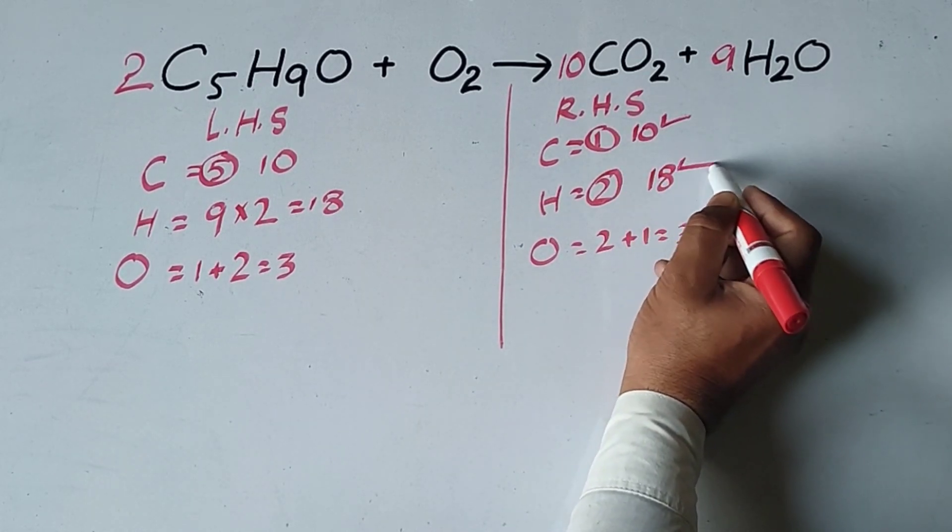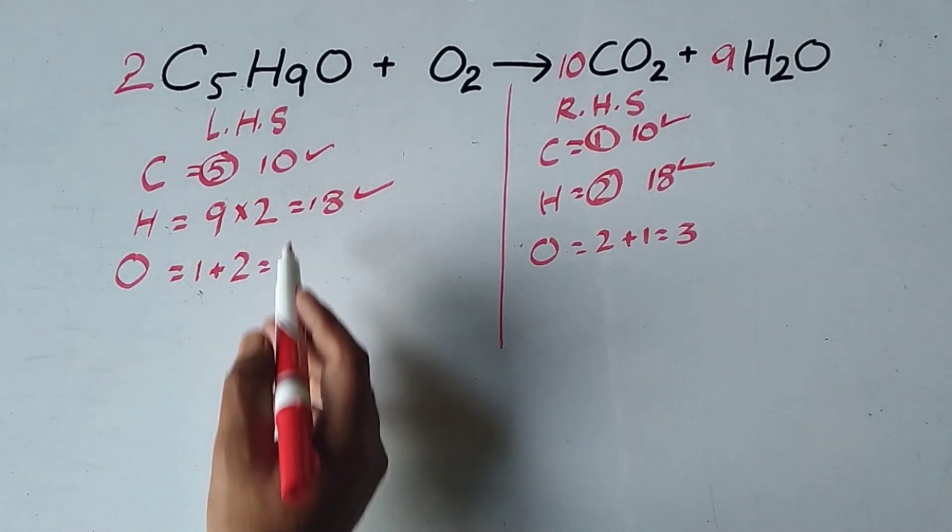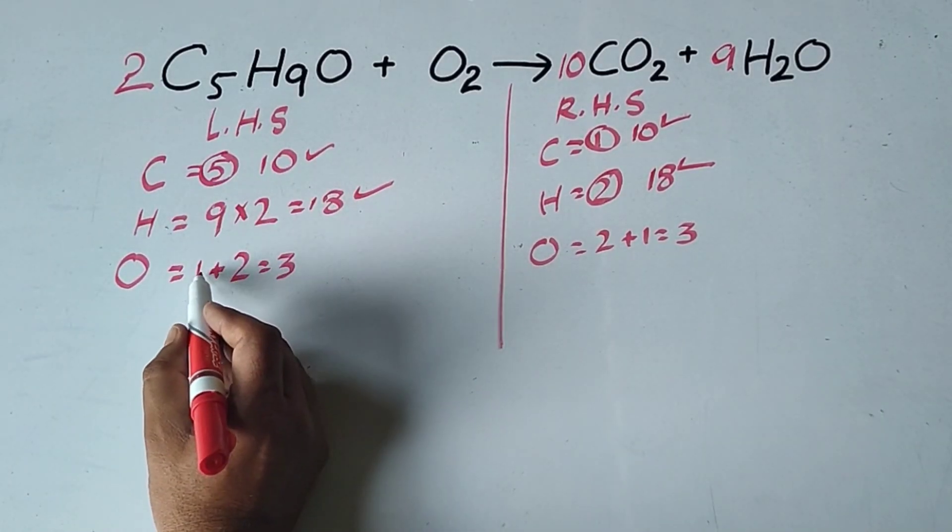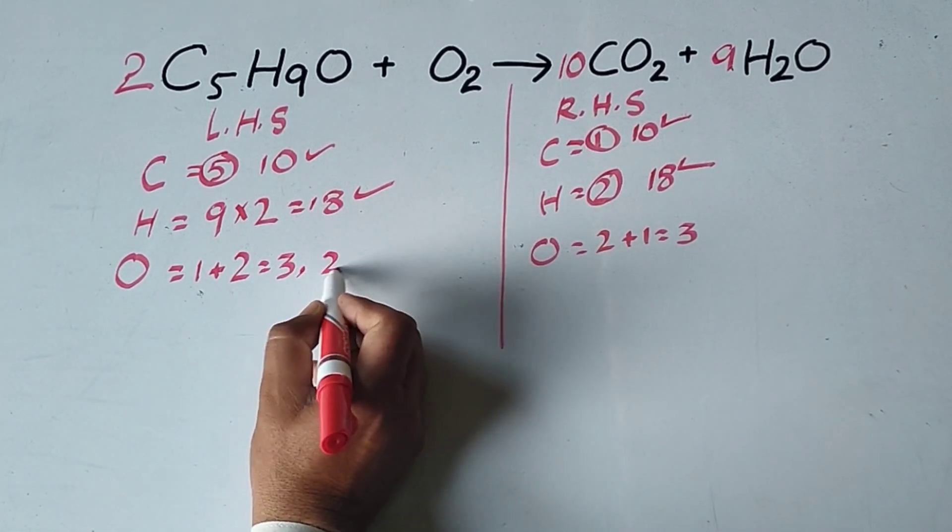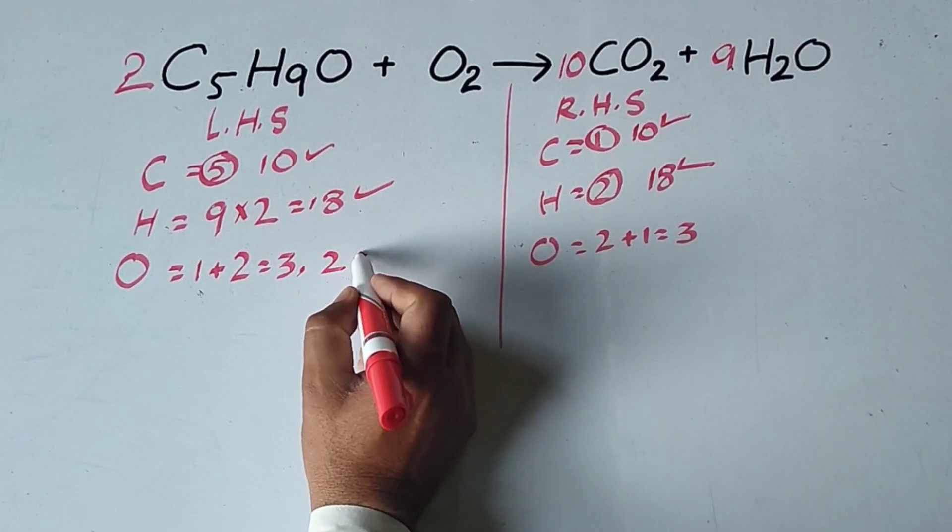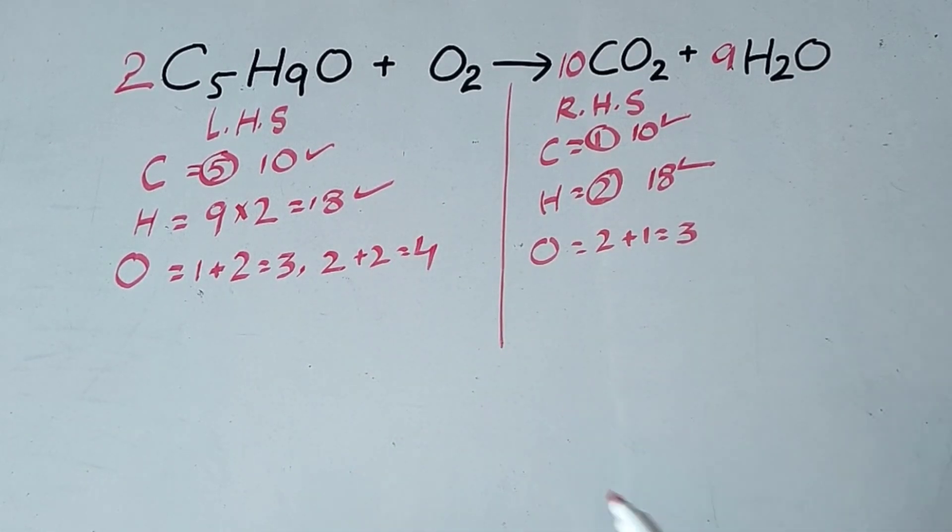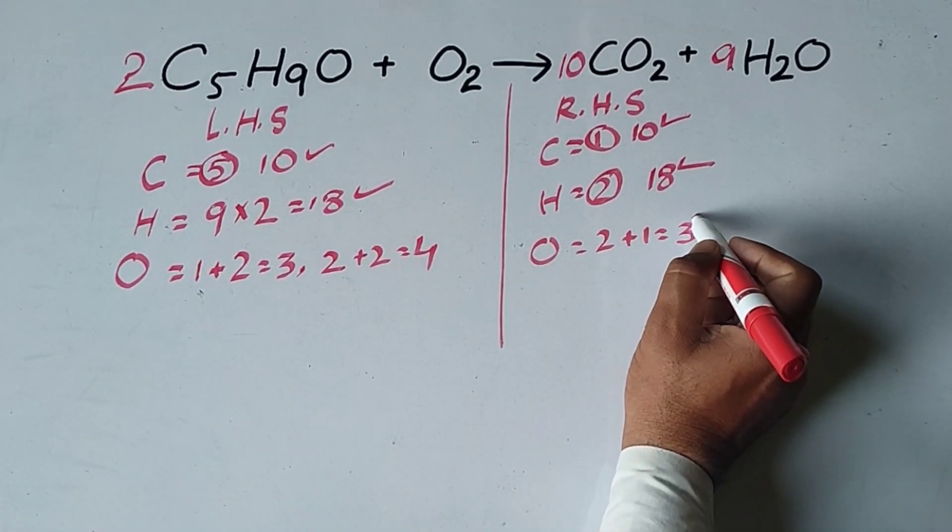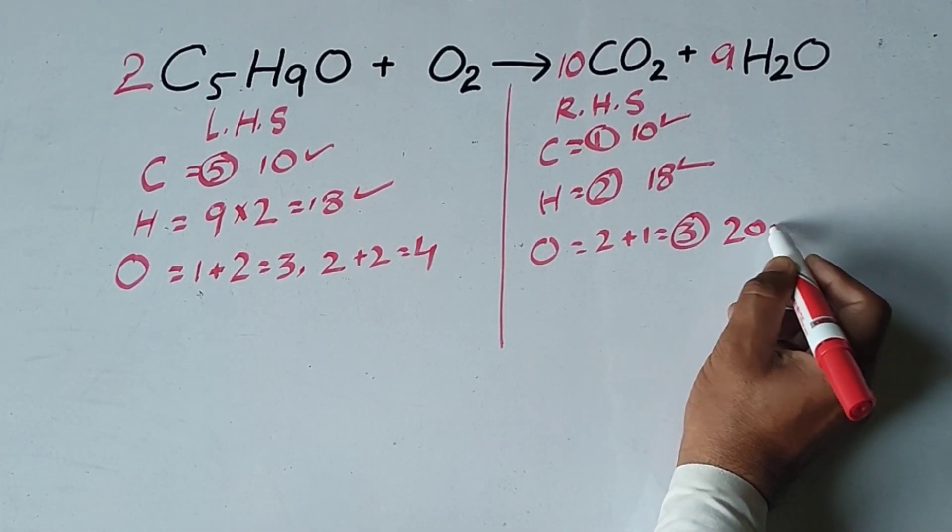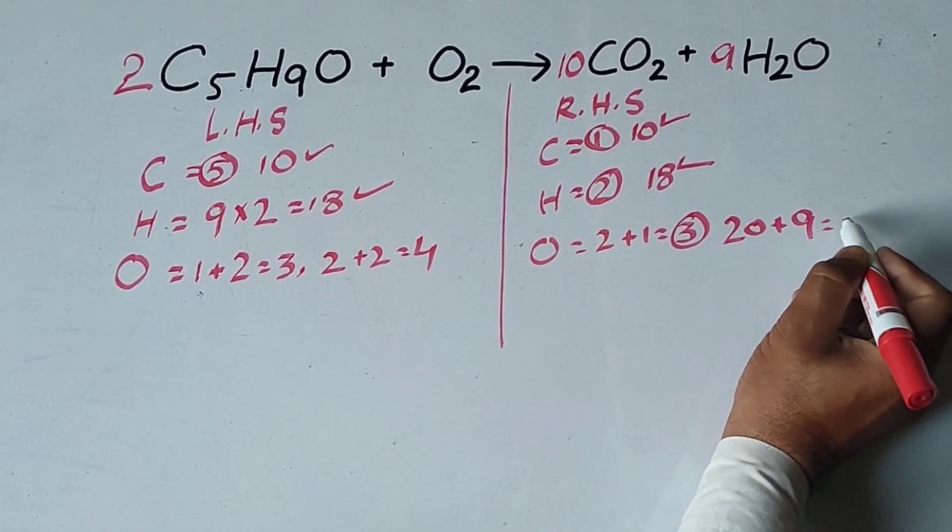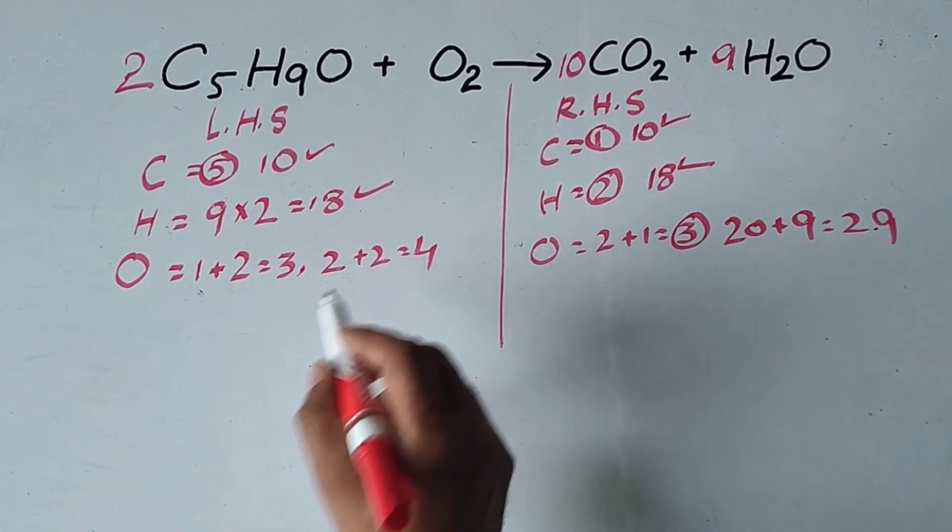Carbon is balanced, hydrogen is balanced. Oxygen atoms can be counted again. Now there are 2 oxygen and 2 oxygen, total 4 oxygen on this side. The number of oxygen atoms is 20 plus 9 equals 29 oxygen. This number is odd, this number is even.